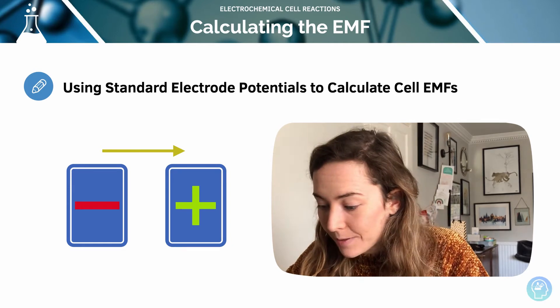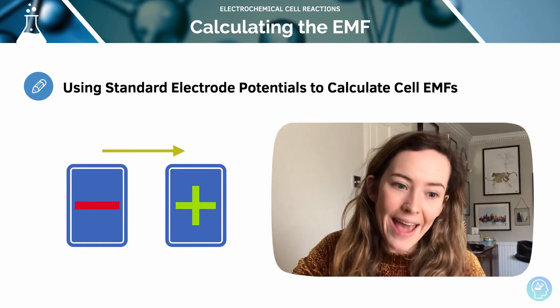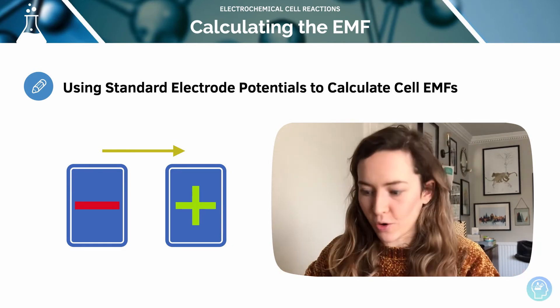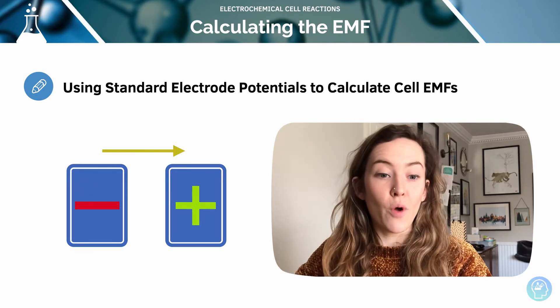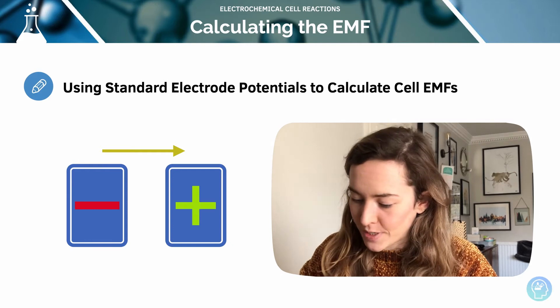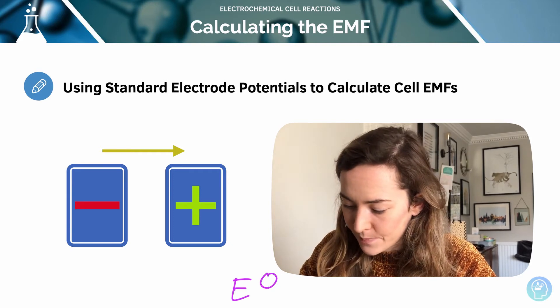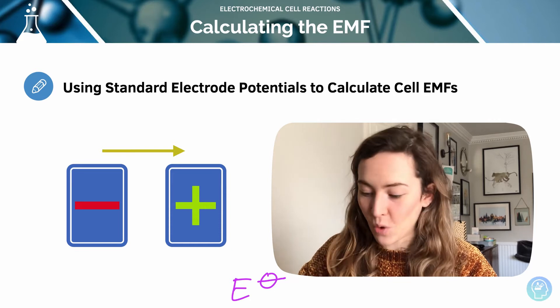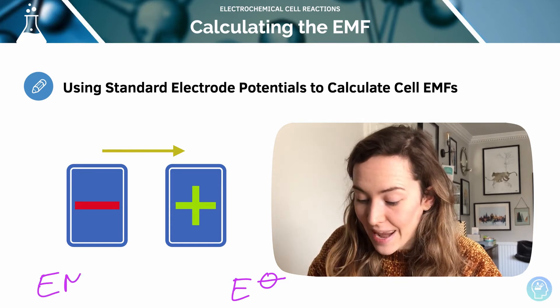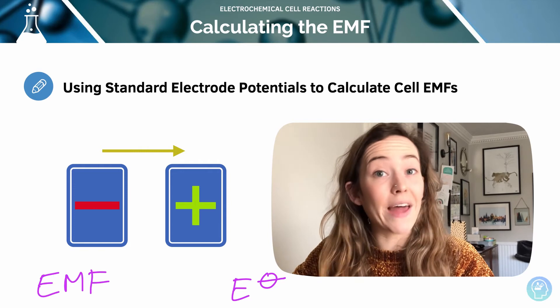So in an electrochemical cell, electrons flow from the more negative electrode to the more positive electrode. Using the direction of the flow of the electrons and the standard electrode potential values, you can work out the standard cell potential, or the EMF, the electromotive force of an electrochemical cell.